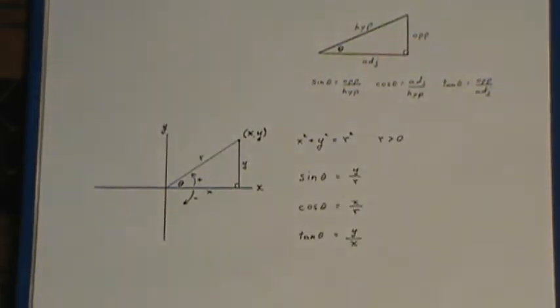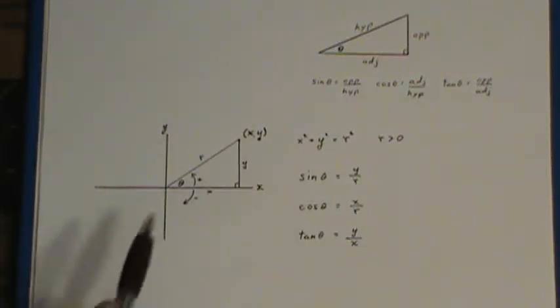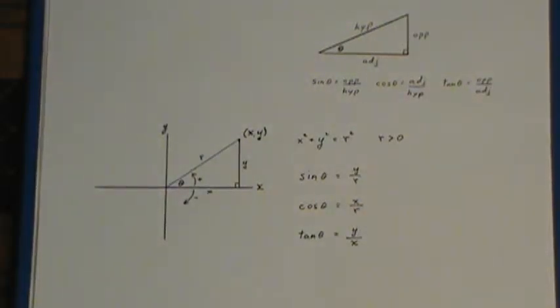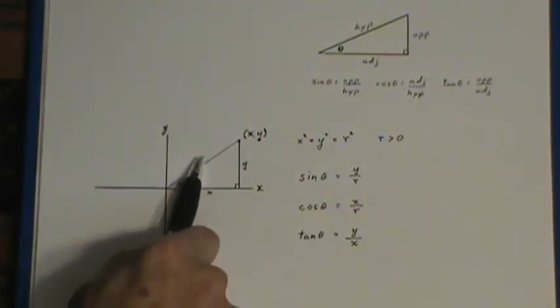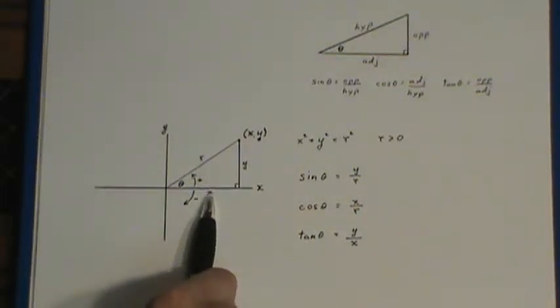And we give new definitions to sine, cos, and tan. Now these definitions are consistent with what you learned before. The sine being y over r is the same as opposite over hypotenuse, cos being x over r is adjacent over hypotenuse, and the tan being opposite over adjacent.